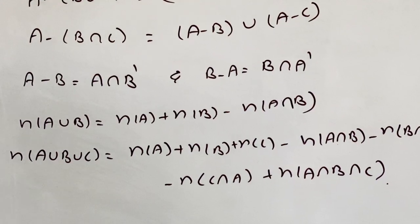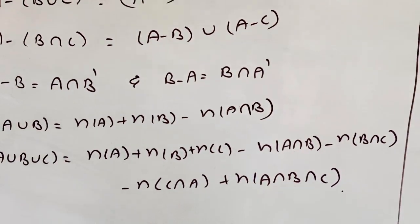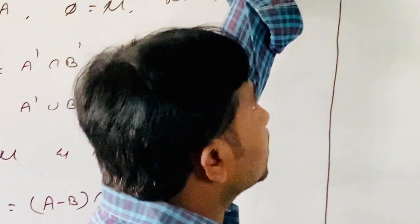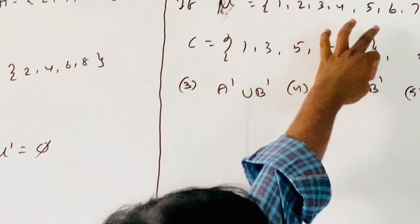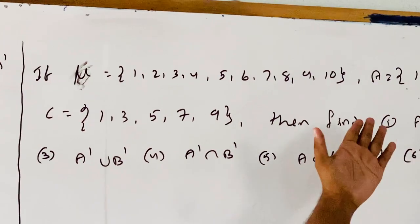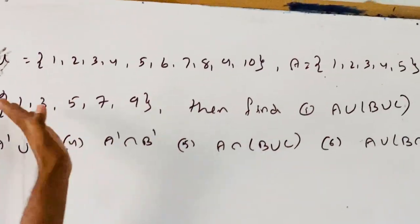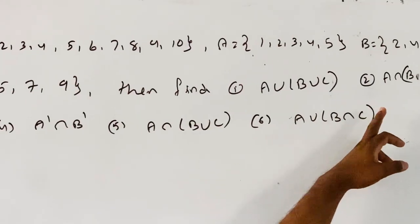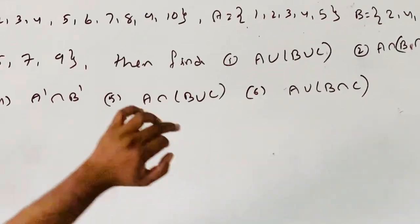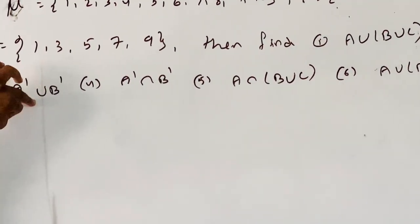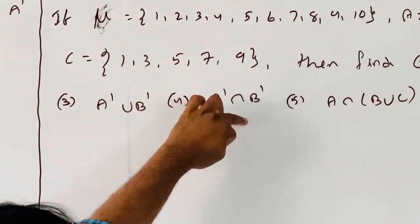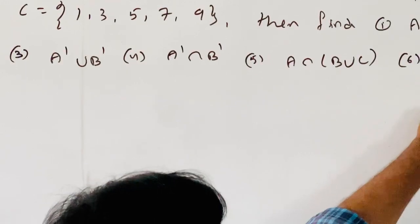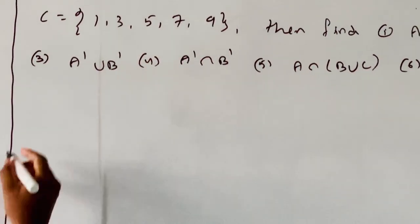Now an example: if mu equals {1, 2, 3, ..., 10}, A equals {1, 2, 3, 4, 5}, B equals {2, 4, 6, 8, 10}, and C equals {1, 3, 5, 7, 9}, then find: A union B union C; A intersection B intersection C; A dash union B dash; A dash intersection B dash; A intersection (B union C); and A union (B intersection C).